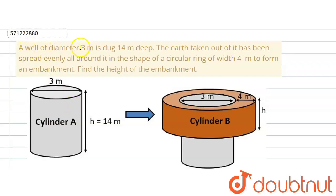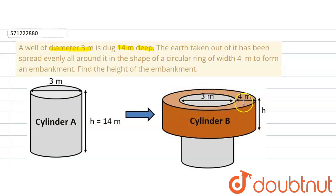The given question says that a well of diameter 3 meters is dug 14 meters deep. The well is in the shape of a cylinder with height 14 meters and diameter 3 meters. The earth coming out during digging is spread on the four sides of the well, evenly around it in the shape of a circular ring of width 4 meters, to form an embankment. Find the height of the embankment.